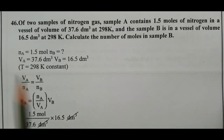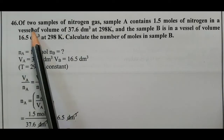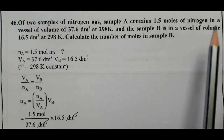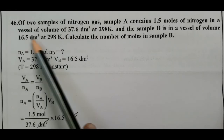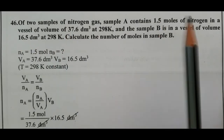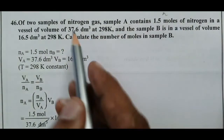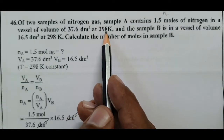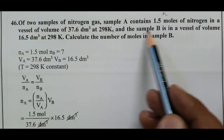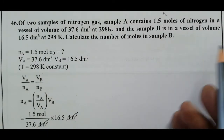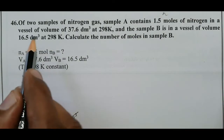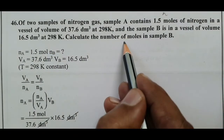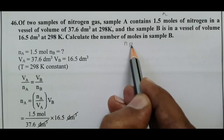Question number 46. Of two samples of nitrogen gas: Sample A contains 1.5 moles of nitrogen in a vessel of volume 37.6 decimeter cube at 298 Kelvin. Sample B is in a vessel of volume 16.5 decimeter cube at the same temperature. Calculate the number of moles in sample B.